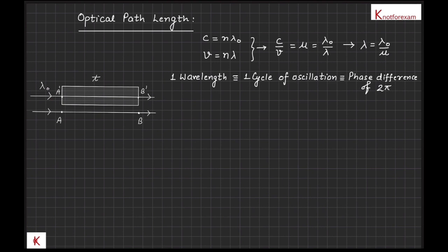Let points A and A dash of two waves are in the same phase, one wave intersect point A dash in a medium of thickness t and refractive index mu. Now number of wavelengths in the length A dash B dash in the medium will be A dash B dash upon lambda, that is t upon lambda or mu t upon lambda naught since lambda equals lambda naught upon mu.